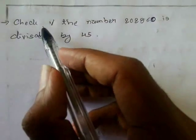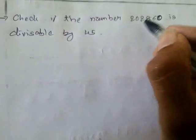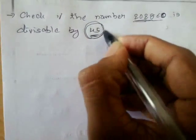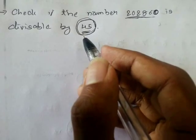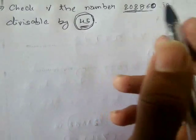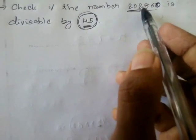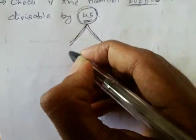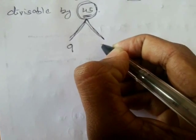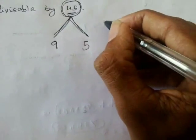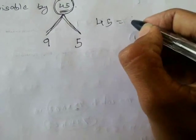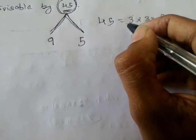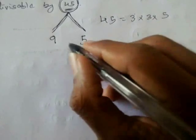The next example says: check if the number 202860 is divisible by 45. We don't have a specific rule for 45, but using basic rules we can find out. We need to find two co-prime factors of 45. The factors of 45 are 3 times 3 times 5, so two co-prime factors are 9 and 5.